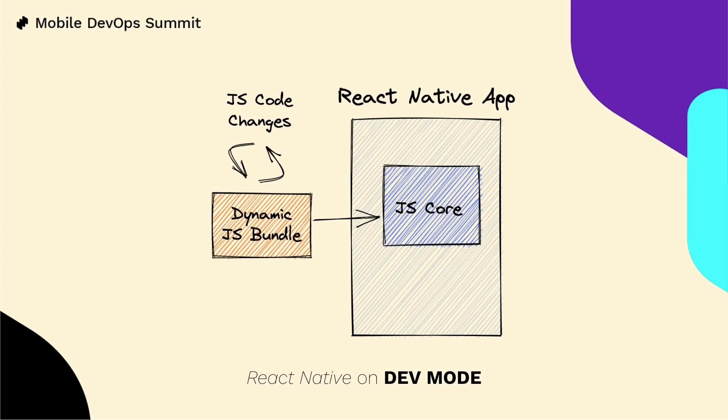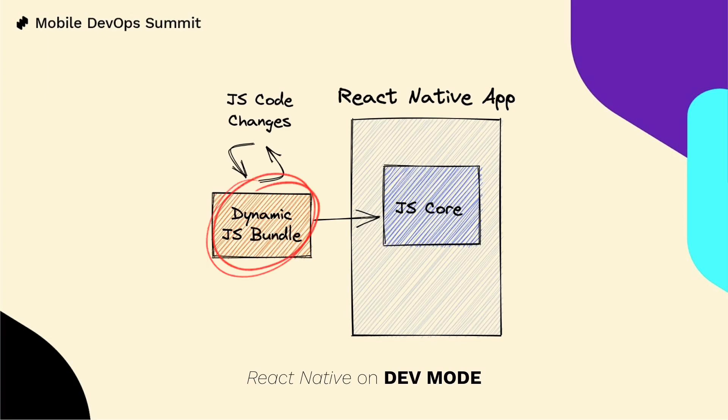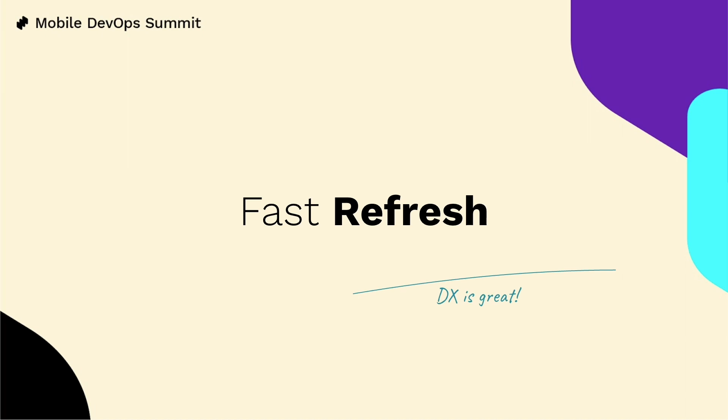A React Native app is actually a native app, meaning that it renders native UI components and has a built-in JavaScript core, which is in charge of executing your JS code — most of your codebase, probably more than 95%. All your JS files are bundled in one big file known as the JS bundle. When developers are coding their app, as soon as they change a file, this bundle is regenerated and then fetched by the app, which executes the new bundle almost immediately, so you can see your changes as you code. This is known as fast refresh, and it's key for the great DX React Native provides.